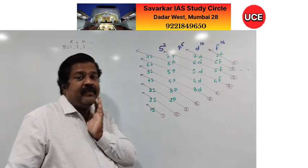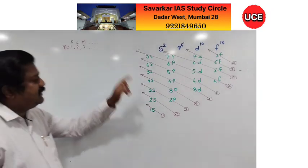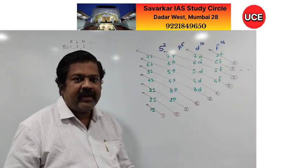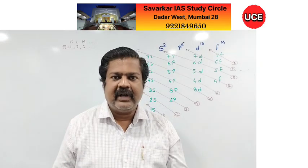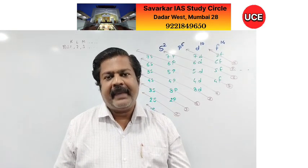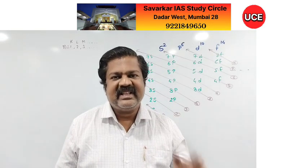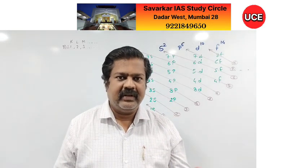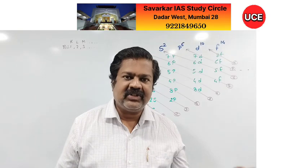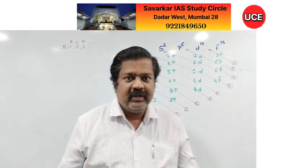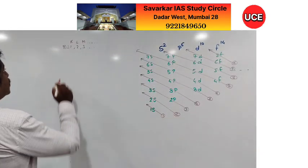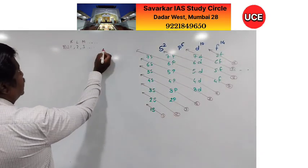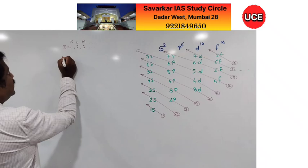So for the principal quantum number, theoretically infinite values exist, but practically the 7th shell is the last. This is the principal quantum number.